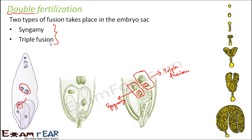Once fusion takes place, the zygote gradually develops into an embryo. Initially the zygote is a single diploid cell. It undergoes repeated divisions to form a two-cell structure, then a four-cell, then an eight-cell structure. Then a globular head structure appears, and gradually the shape changes until the entire embryo takes its final shape, with two cotyledons, capable of giving rise to a new plant. We will look at the different stages of the embryo a little later.